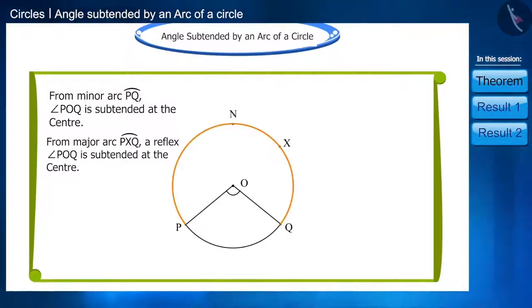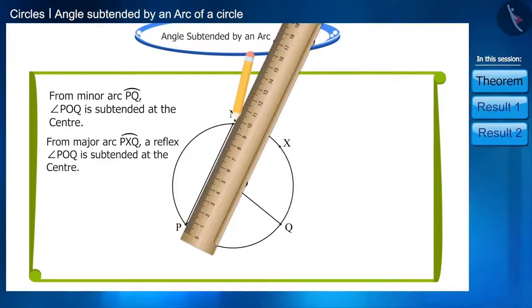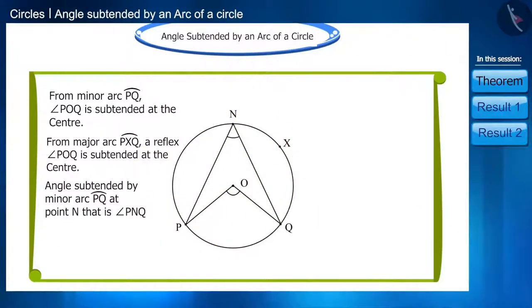If we take point N on the remaining portion of the circle, now connect the point P and Q to the point N in this way. We will get the angle subtended by the minor arc PQ at point N, that is angle PNQ.